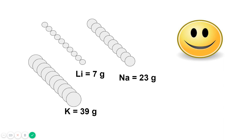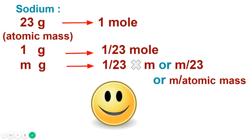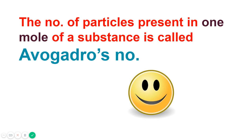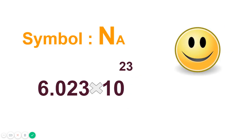Now let's see the formula for number of moles. You can find the number of moles for a given mass. For example, sodium: 23 grams is the atomic mass and makes one mole. By unitary method, for m grams it is m/23, or more generally: number of moles = given mass of the substance divided by atomic mass, molecular mass, or formula mass.